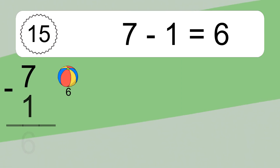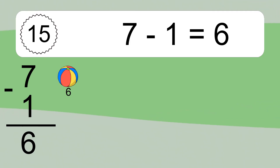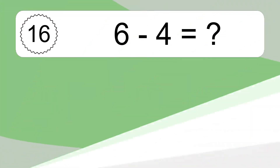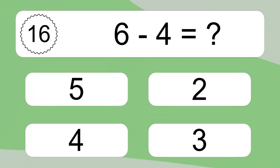7 minus 1 equals what? 7 minus 1 equals 6. Let's count it: 6.